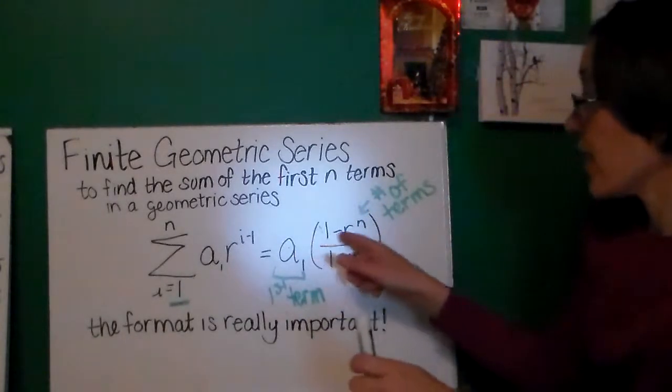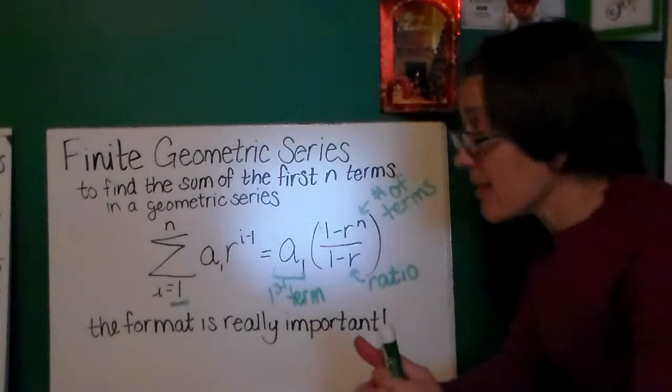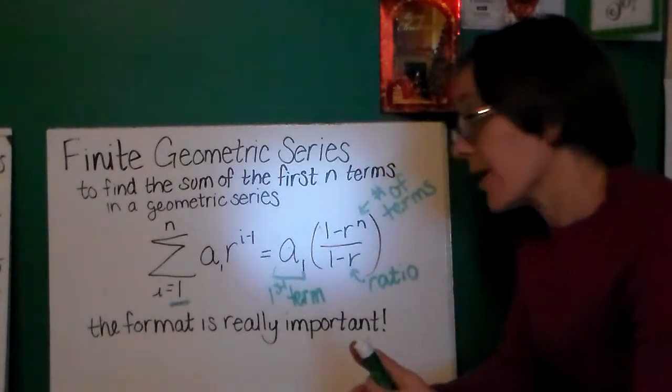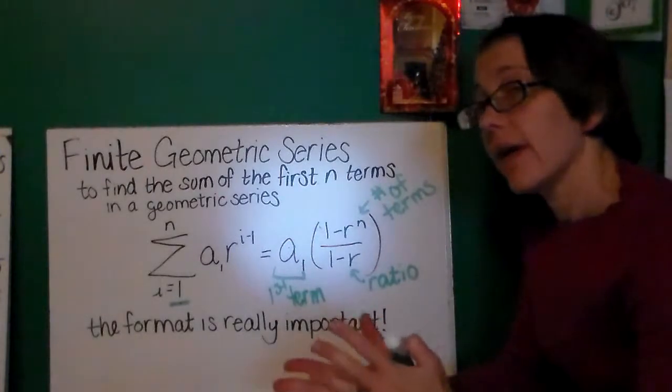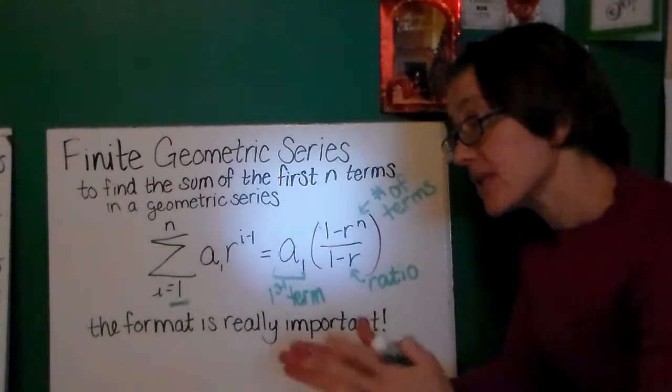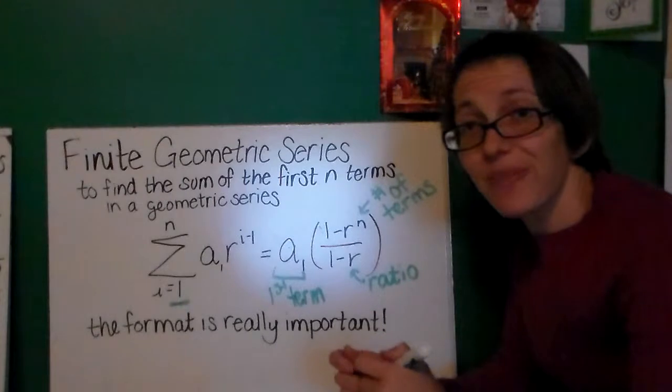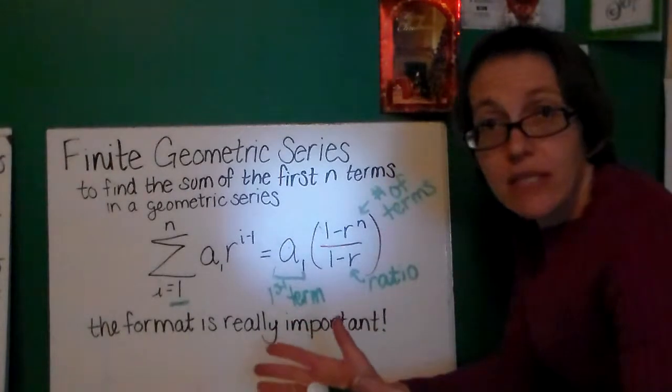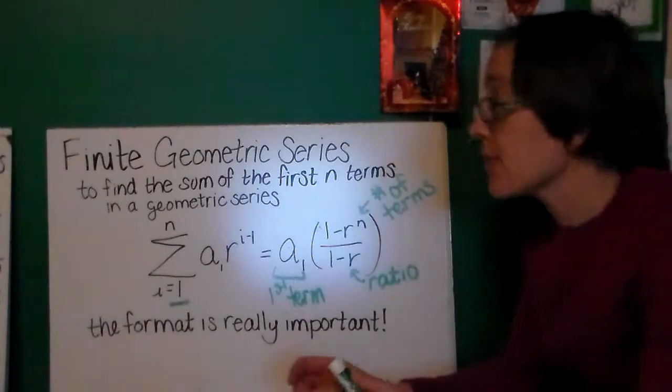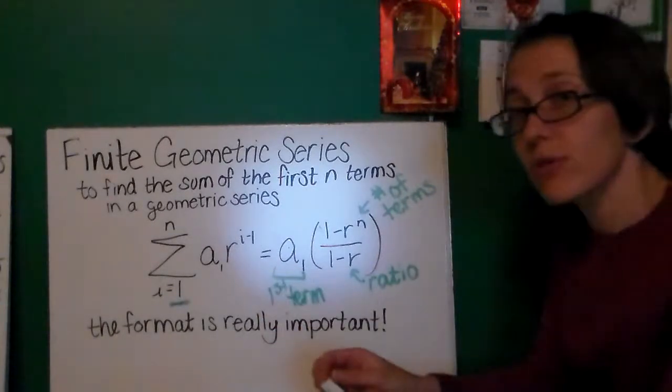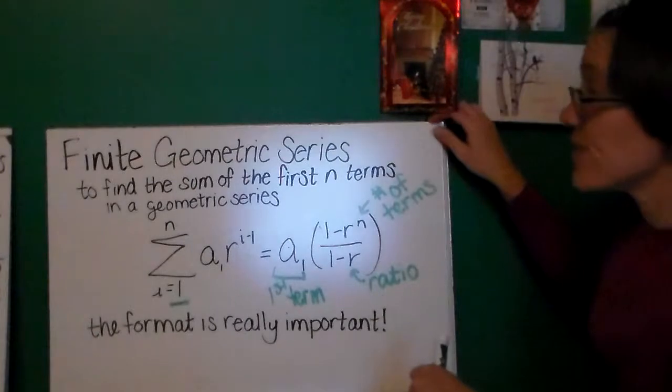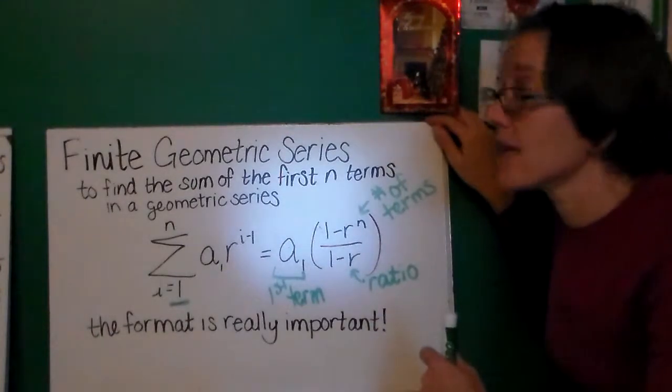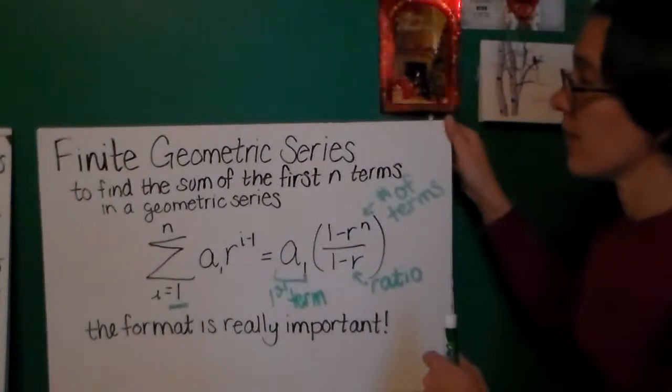Again, you're going to have 1 minus r to the n power divided by 1 minus r. It's helpful to do this in steps, especially if you're going to be using a calculator so that you're not just typing everything in and getting a really weird answer that doesn't make sense because you forgot to put the parentheses in. a_1, of course, is the first term. So we'll be using this in our next slide in which we'll do a finite geometric series in this problem.